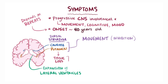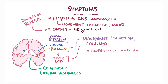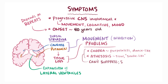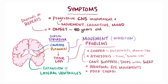Neuronal death in the basal ganglia causes movement problems like chorea, which are purposeless, dance-like jerky movements, and athetosis, which are slower, writhing, snake-like movements mainly affecting the hands. These involuntary movements can't be consciously suppressed and stop only with sleep. Other motor problems include abnormal eye movements and poor coordination.